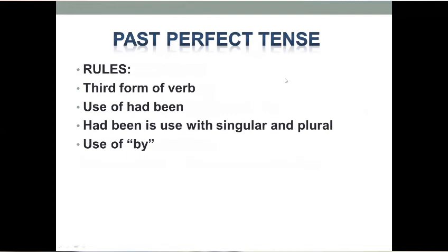Next tense हमारे पास आता है Past Perfect Tense. Past Perfect Tense के active sentence को passive में change करने के लिए जो rules हैं वो हैं: third form of verb — verb की third form use करेंगे। Use of 'had been' — had been का इस्तमाल करेंगे। Had been जो है वो singular और plural दोनों के साथ use होगा। साथ में by भी use करेंगे।